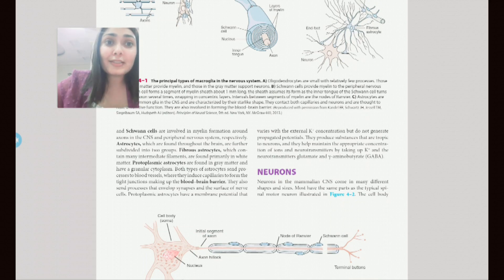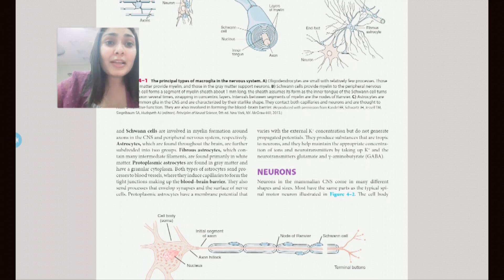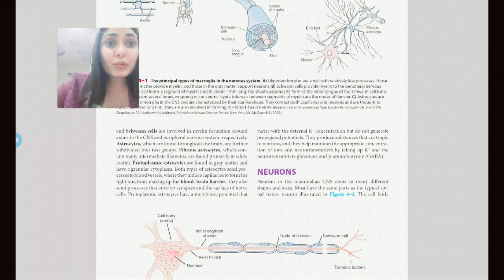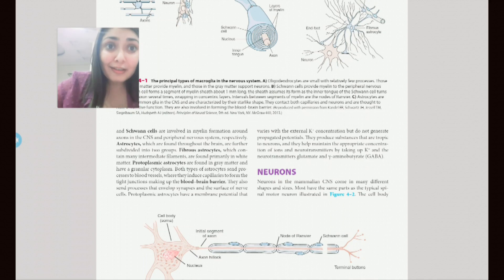The third type of macroglia cells are astrocytes. They get their name from their shape — their star shape — that's how they are called astrocytes. There are two types of astrocytes: fibrous astrocytes and protoplasmic astrocytes. Fibrous astrocytes are predominantly found in the white matter and they contain intermediate filaments, whereas protoplasmic astrocytes are mostly seen in the grey matter. Astrocytes play a really important role in forming the blood-brain barrier. As they are star-shaped, they send out projections towards the endothelium of the blood vessels forming the blood-brain barrier, and other projections go to support neurons and help in maintaining the membrane potential of the neurons. So these are the glial tissues.